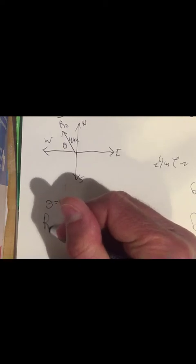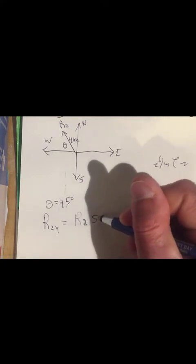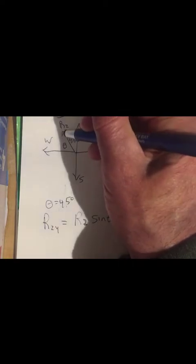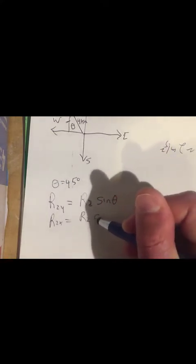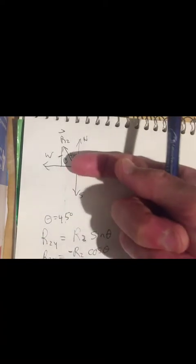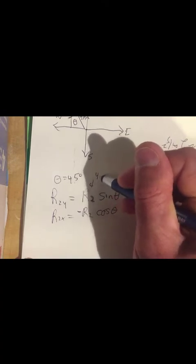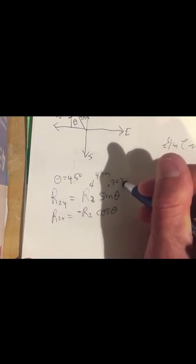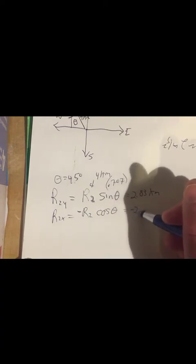So I could say, r2y is equal to r2, the length of r2, which is four kilometers, times the sine of theta, in this case, because the sine would be the opposite side divided by the hypotenuse. So that's how I'd find the y component. The x component would be equal to r2 cosine theta, but negative. I'd have to put a negative sign in there to reflect the fact that this vector is pointed in the negative x direction. So I account for that in looking at whether the components are positive or negative. So let me just find it in this case. I'd say, r2 is four kilometers, sine of 45 degrees is 0.707. So that would give me 2.83 kilometers in the y direction and negative 2.83 kilometers in the x direction.